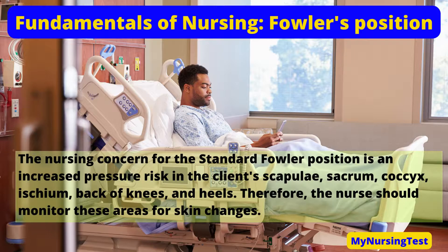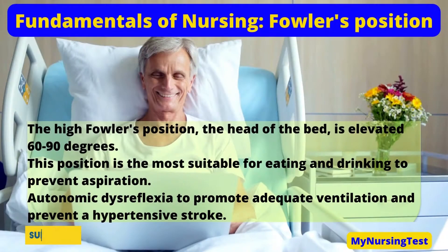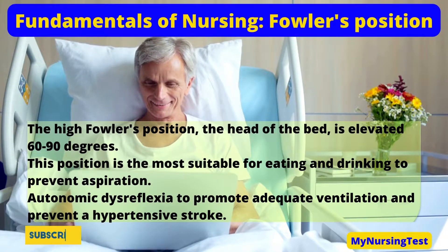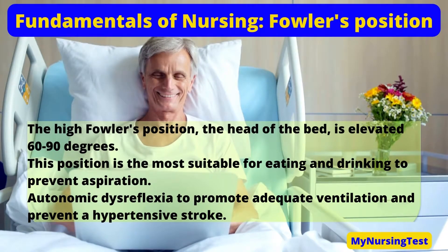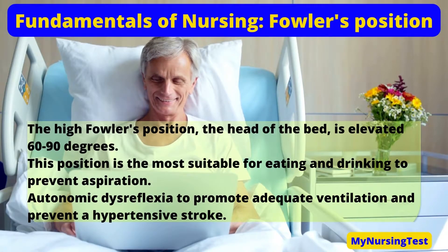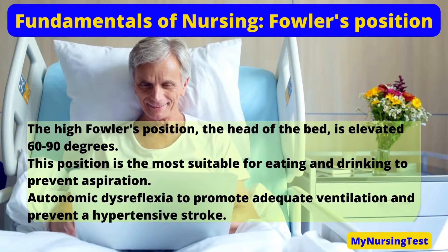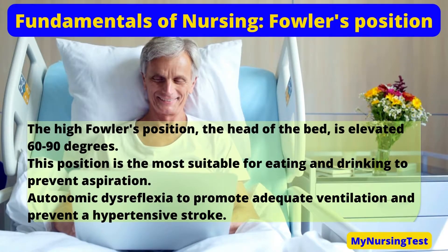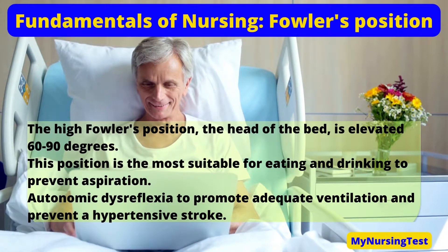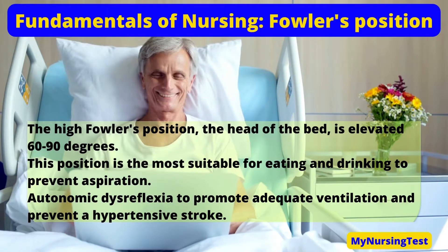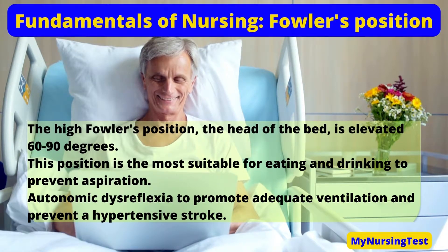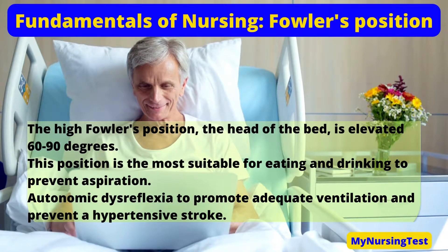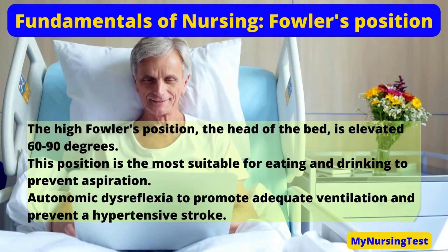The nurse should monitor these areas for skin changes. In the high Fowler's position, the head of the bed is elevated to 90 degrees. This position is the most suitable for eating and drinking to prevent aspiration. The high Fowler's position is also preferred for inserting a nasogastric tube to reduce the risk of pulmonary aspiration if the client should vomit. It is also used for clients with autonomic dysreflexia to promote adequate ventilation and prevent a hypertensive stroke.